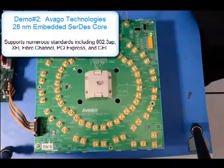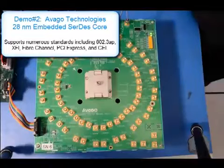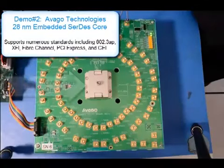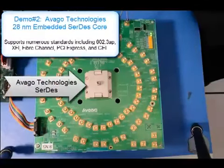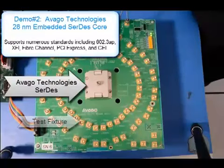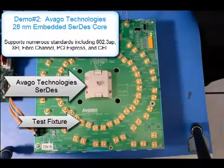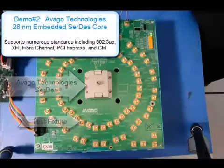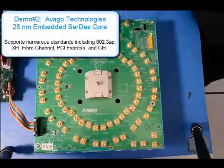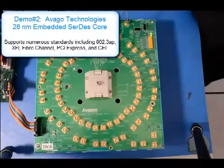As data rates increase to 28 gigabits per second and beyond, accurate component characterization becomes more difficult. Devices such as this 28nm SERDES core from Avago Technologies can benefit from the measurement performance of the 86108B, as it can quickly and accurately measure the core's high signal integrity and exceptional jitter performance.